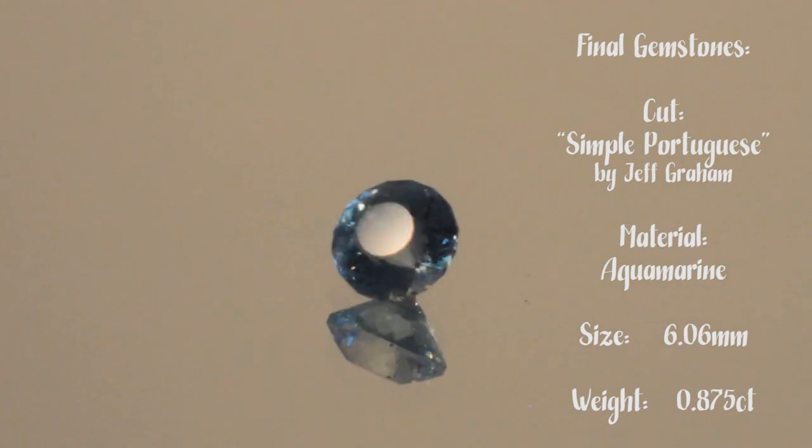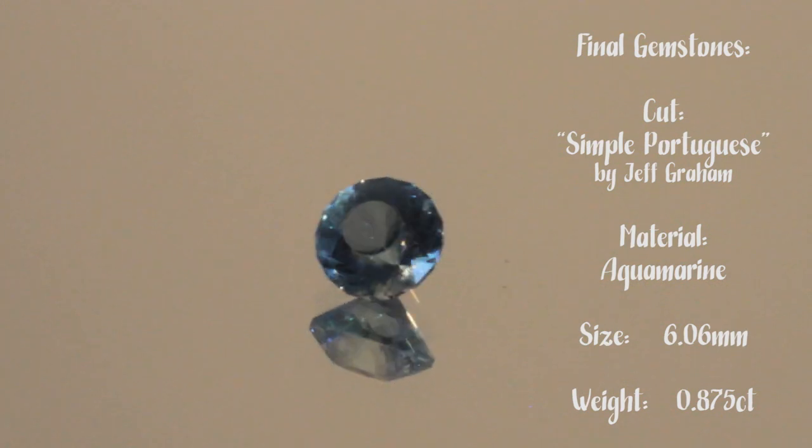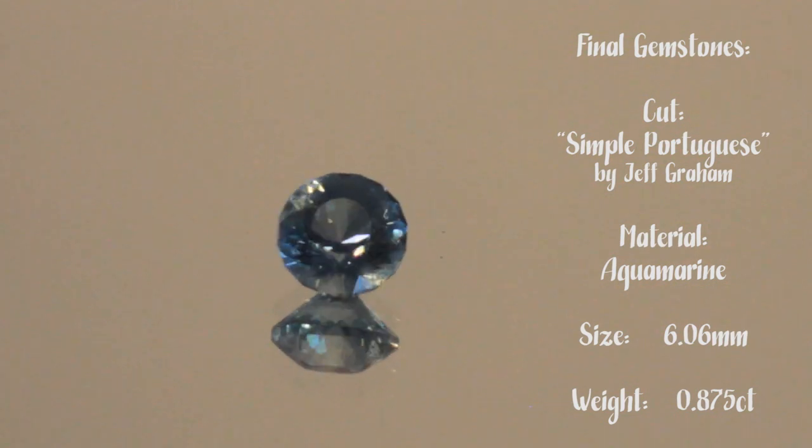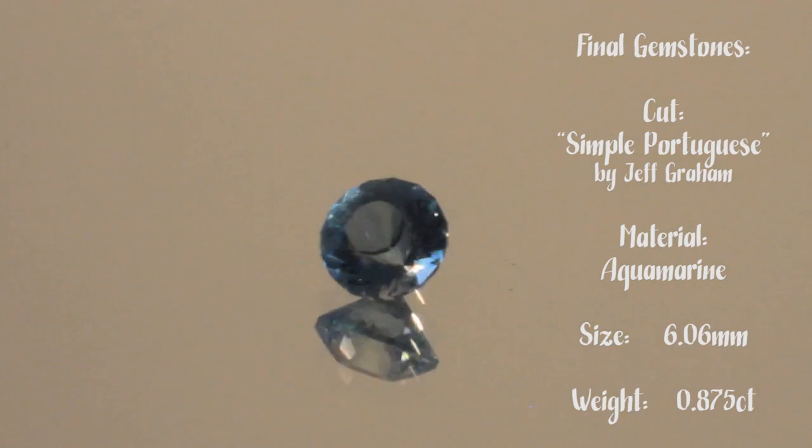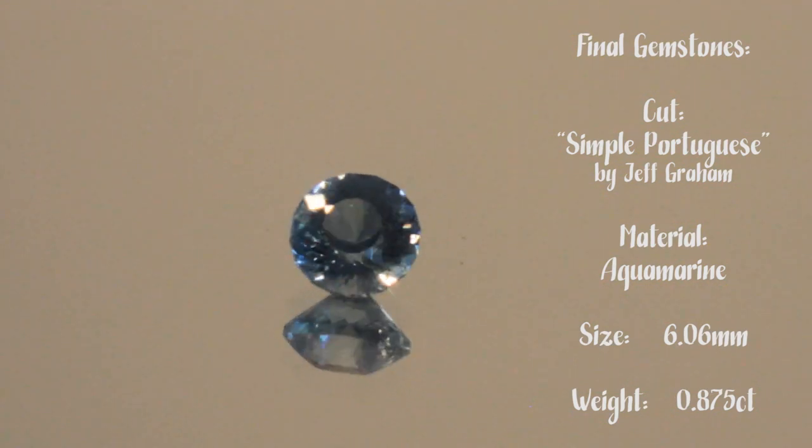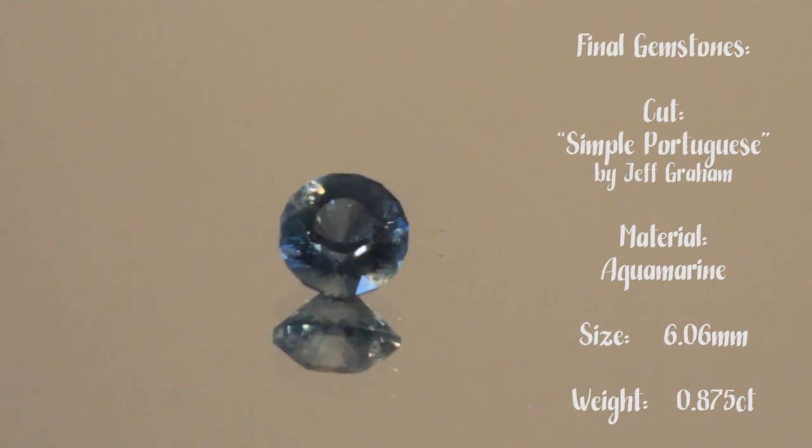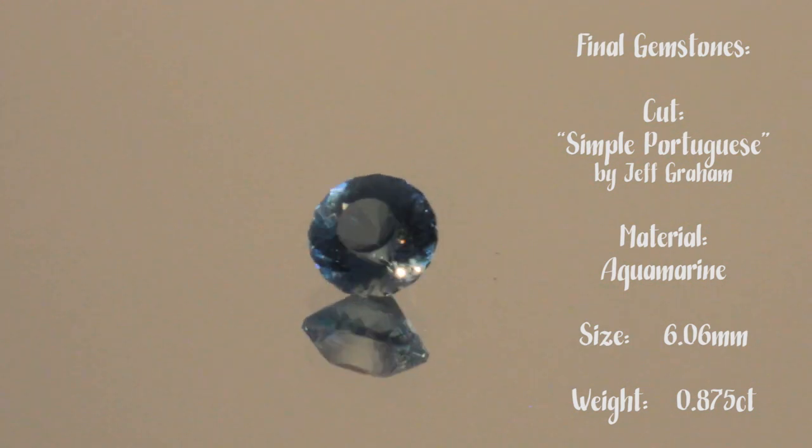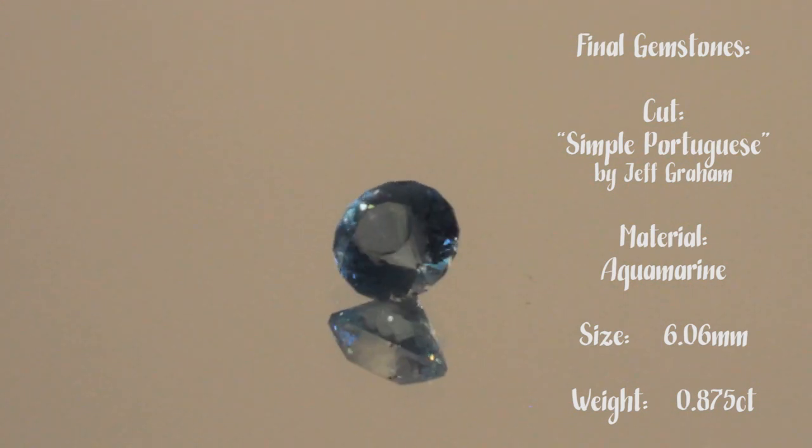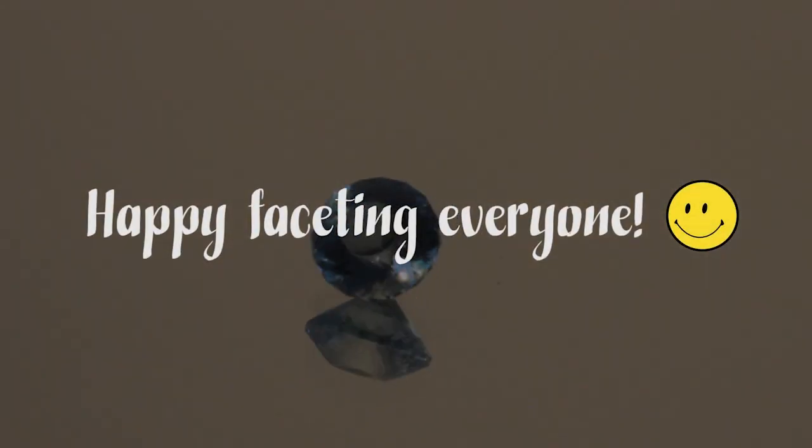But I do like this design much better than the standard round brilliant, but that's just my preference. Also tested out, continued testing out, my UV light activated super glue. And in this case, I immediately started cutting the crown or upper half of the stone after transferring from the bottom half. And the super glue was cured and I had no issues in cutting the upper half of the stone. So the UV light does instantly cure that super glue. So please let me know in the comments what you think of this piece of aquamarine and the Portuguese design. And as always, happy faceting, everyone.